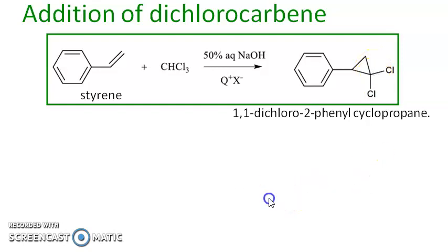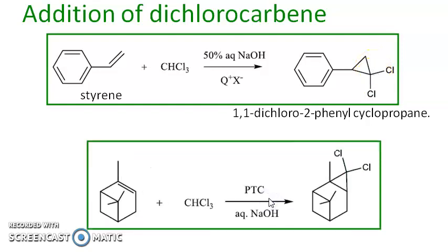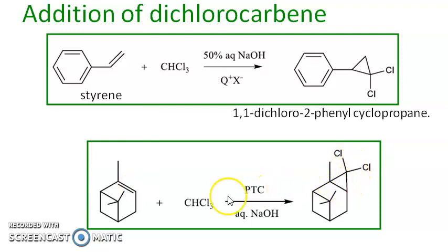Another example is using alpha-pinene — you can introduce the cyclopropane ring on alpha-pinene very easily. Simply use chloroform, PTC, and sodium hydroxide, and you get the product wherein the dichlorocarbene is inserted or added to the double bond.